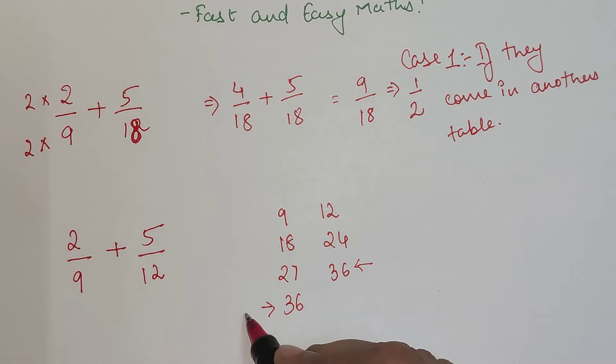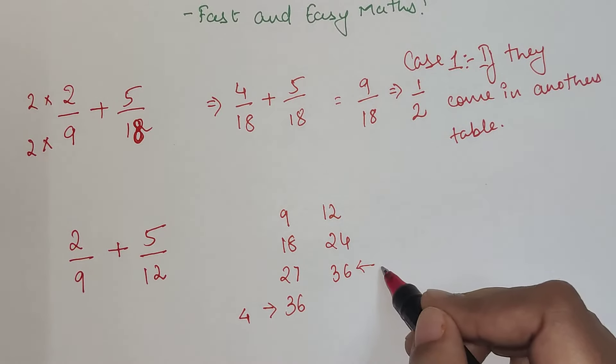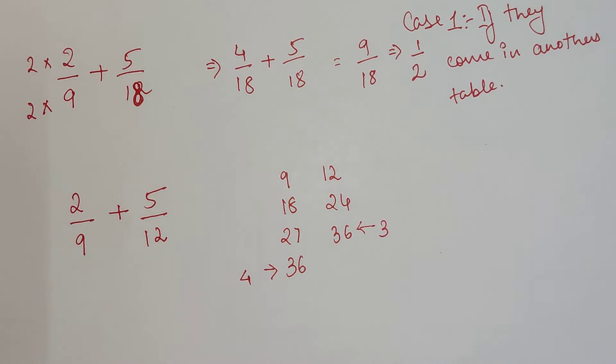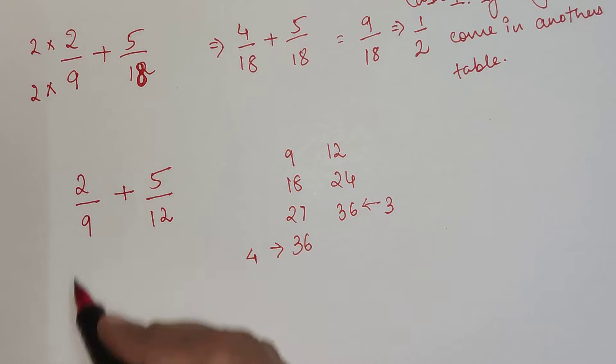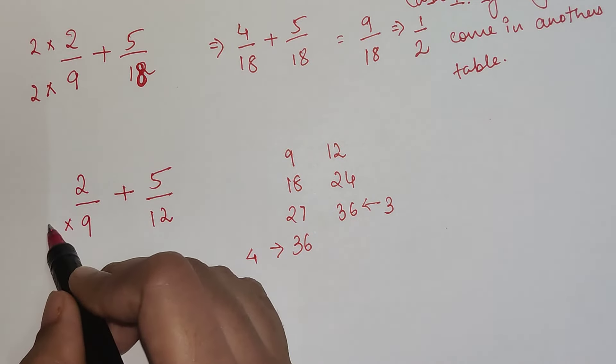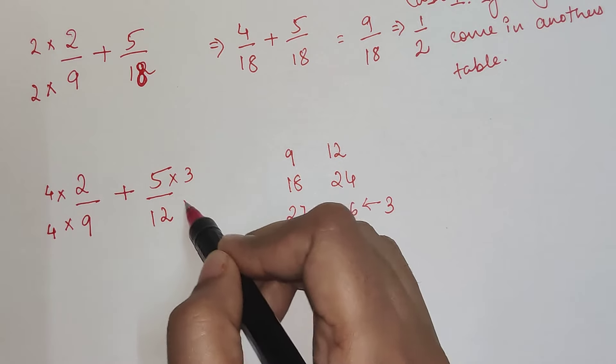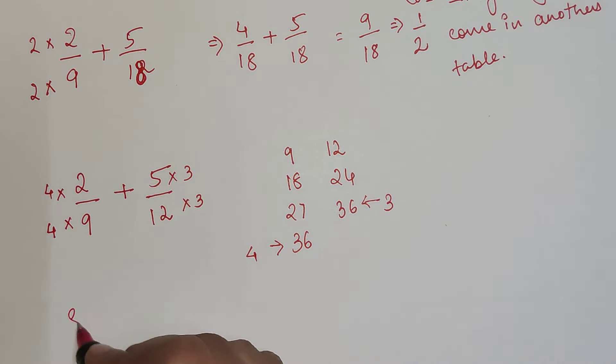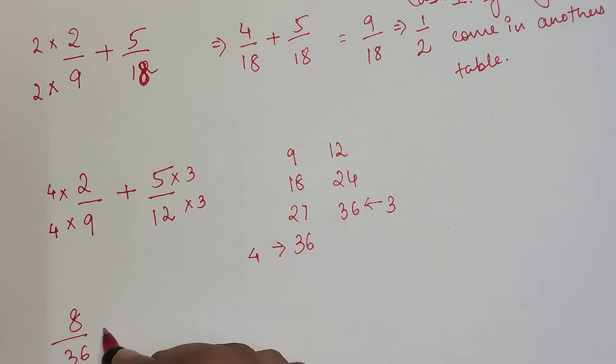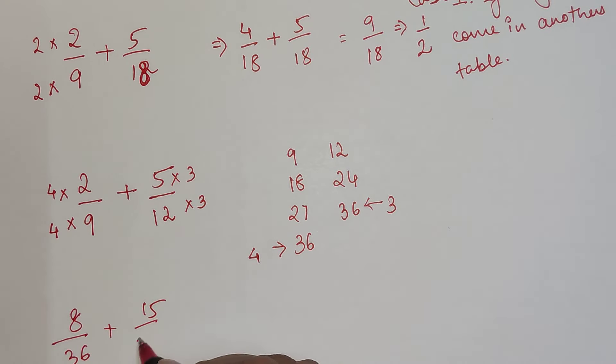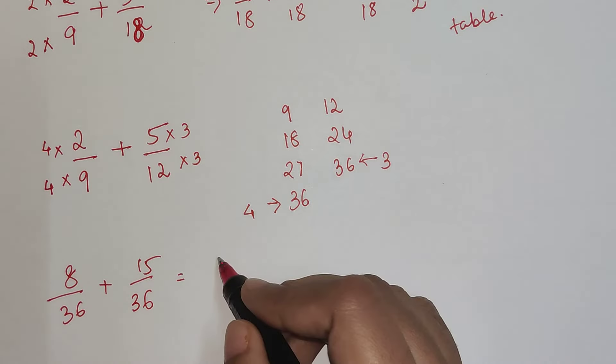When you multiply this with 4 you are getting 36, and when you multiply 12 with 3 you are getting 36. Here I multiply by 4 and here I multiply by 3. So now I'm getting 8 upon 36 plus 15 upon 36. Now I can directly add them.